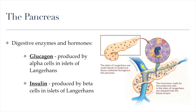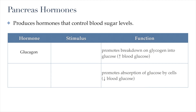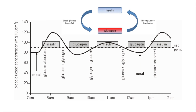Glucagon and insulin essentially have opposite roles. Glucagon promotes the breakdown of glycogen into glucose and is stimulated by low blood sugar. Whenever blood sugar levels get too low, glucagon is secreted and it promotes an increase in blood sugar by allowing cells to convert glycogen — the way our cells store glucose short-term — back into glucose. Insulin, on the other hand, is stimulated by high blood sugar and promotes the absorption of glucose by body cells, lowering blood glucose levels. Both insulin and glucagon are produced throughout the day and have opposite effects.